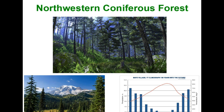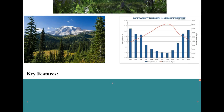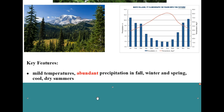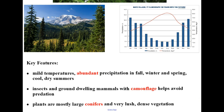Next is the northwestern coniferous forest, found in the upper west of our country. Key features include mild temperatures, abundant precipitation in fall, winter, and spring, but cool dry summers. Insects and ground-dwelling mammals adapt with camouflage to avoid predation. As the name implies, plants are mostly large conifers, and this biome is known for very lush, dense vegetation — very similar to tropical rainforests but less diverse.